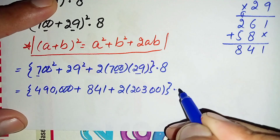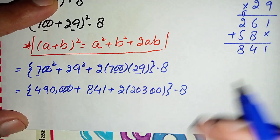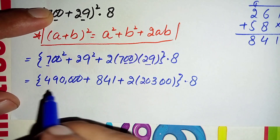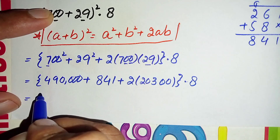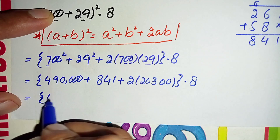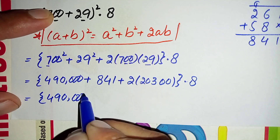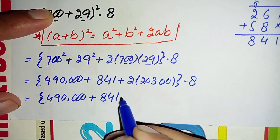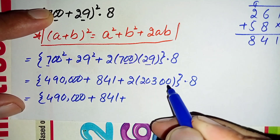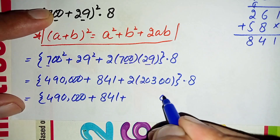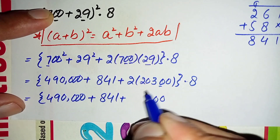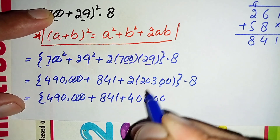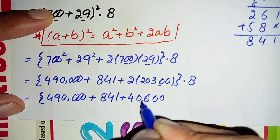Combining the terms inside the parenthesis, we have 490000 plus 841 plus 40600, times 8.